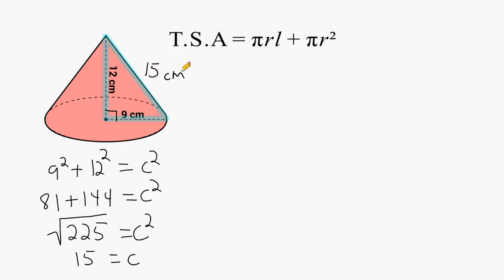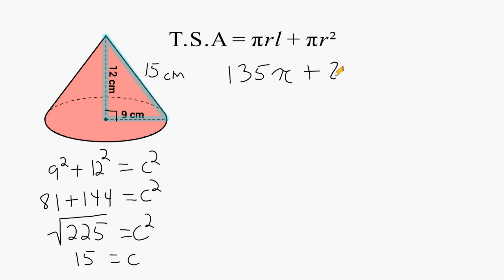Now we have all the information needed to find the total surface area. We multiply the radius by the slant height: 9 times 15 is 135, and we multiply that by π, giving us 135π for the lateral area. Then we square the radius: 9 squared is 81, so the circular surface area is 81π. Combining like terms, 135π plus 81π equals 216π.